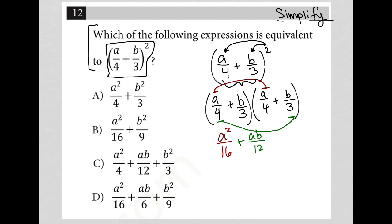I can take my two inner terms here. That would also give me ab over 12 when I multiply b over three plus a over four. And lastly, I can multiply my two last terms, my b over three times my b over three. And that would give me b squared over nine.